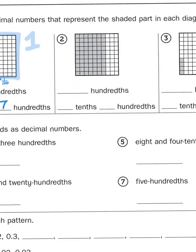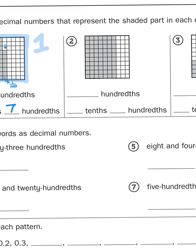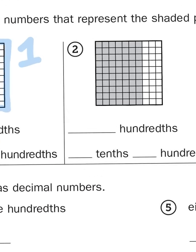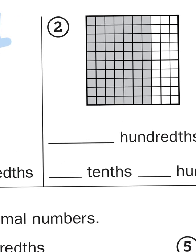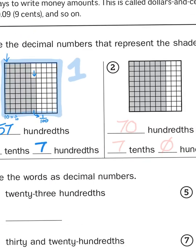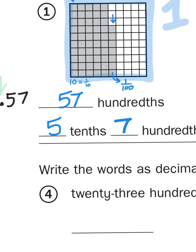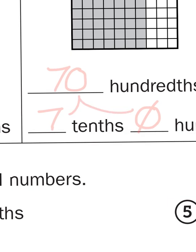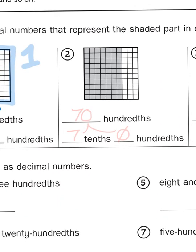Now let's look at number two. Number two just has full columns shaded in. If you count the columns — one, two, three, four, five, six, seven — there are seven columns of ten, so those would be seven tenths. Since there are no loose hundredths shaded in, there are zero hundredths, giving us a total of seventy hundredths.